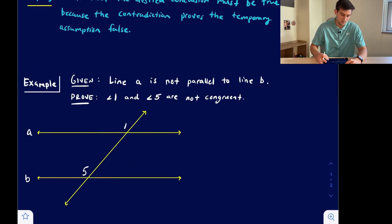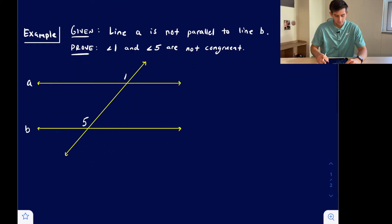Okay, so let's look at an example of what this would look like. So we have a diagram given to us. Looks like two parallel lines cut by a transversal, but the given information tells us that line A is not parallel to line B. So now we want to prove that angle 1 and angle 5 are not congruent.